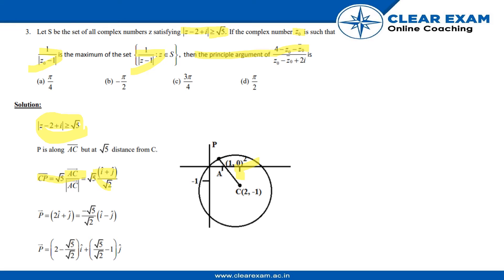Ĉ is equal to 2i - j, so it will become (√5/√2)(i - j). P vector finally will become (2 - √5/√2)i + (√5/√2 - 1)j.